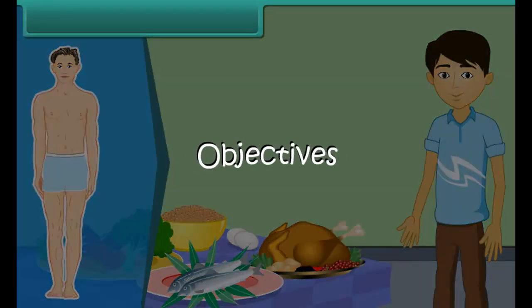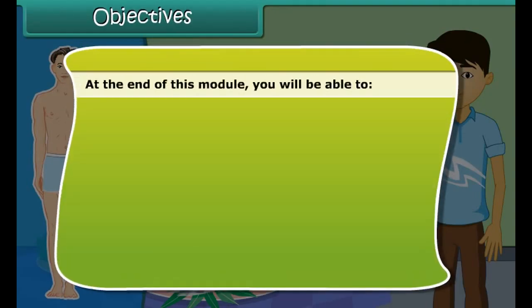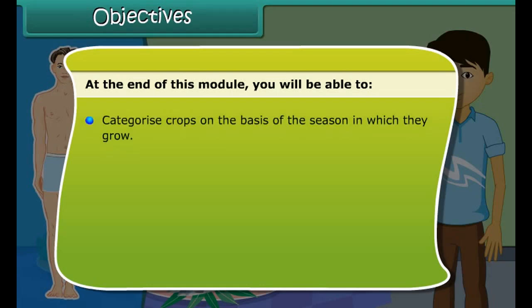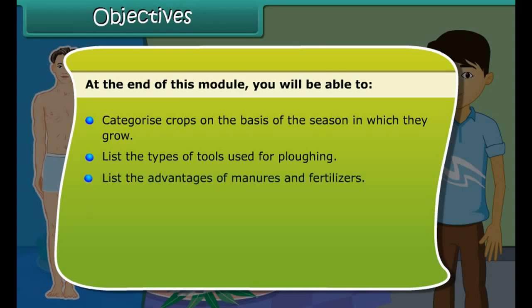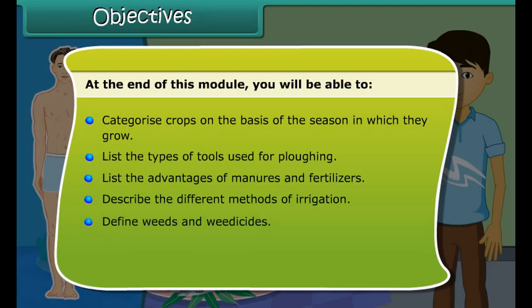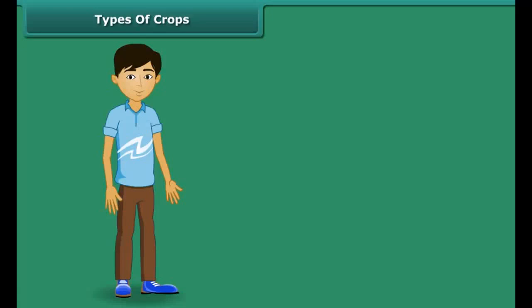At the end of this module, you will be able to: categorize crops on the basis of seasons in which they grow; list the types of tools used for plowing; list the advantages of manure and fertilizers; describe the different methods of irrigation; define weeds and weedicides; describe harvesting and storage of crops; and explain animal husbandry.